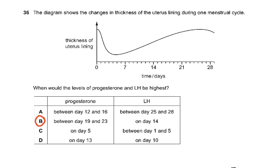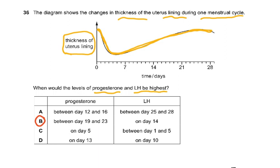Question 36: the diagram shows changes in thickness of the uterus lining during one menstrual cycle. The lining is thick, then shed, then it repairs and remains thick again. When would levels of progesterone and LH be highest? LH peaks on day 14 — it rises, peaks, then goes down again. Day 14 appeared in only one of the answer options, making it a useful clue to identify the correct answer.